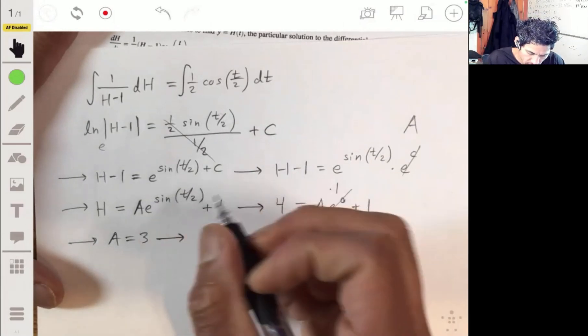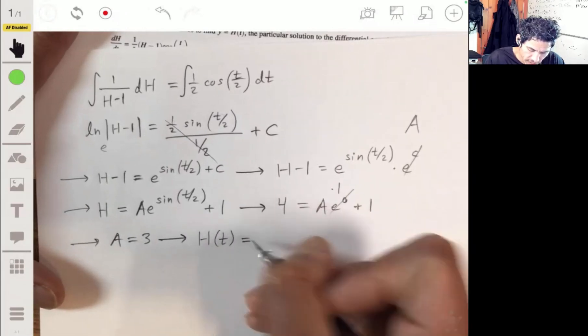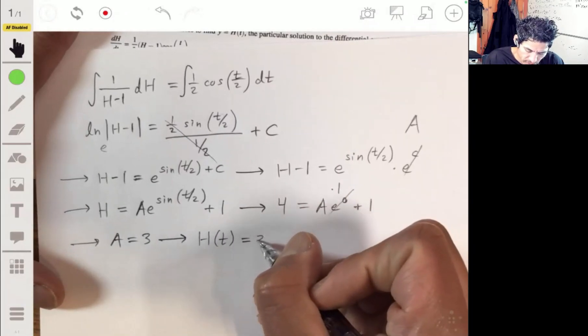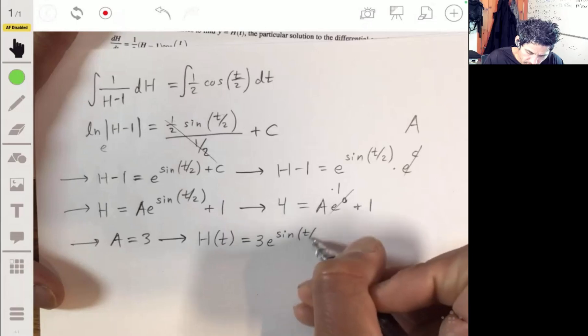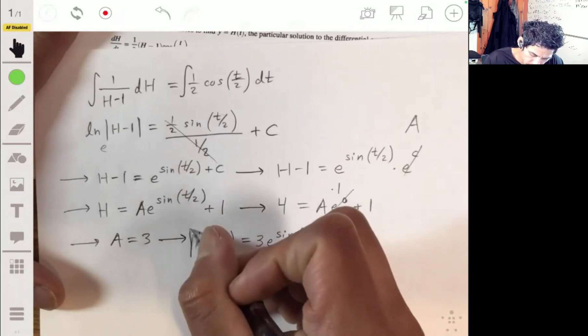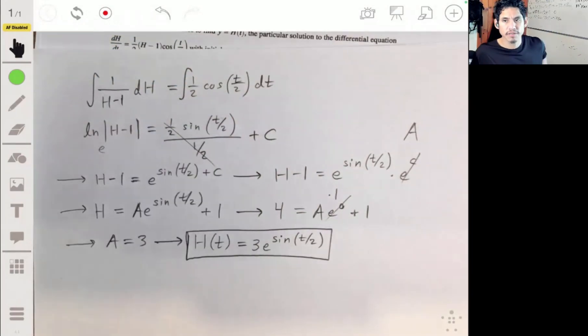With that we plug in three and we have our equation for h of t equal being equal to three e to the sine of t over two plus one. And there you go. There's my answer. I'm very confident that I'm correct, but who knows?